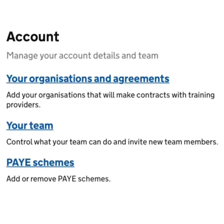The next section down from this is titled 'Account'. Under this section, you can add other members of your team to your digital account and control what access they have. Also under this section, you can add connected organisations to your account — for example, if you have a pairing company, they can be added here.